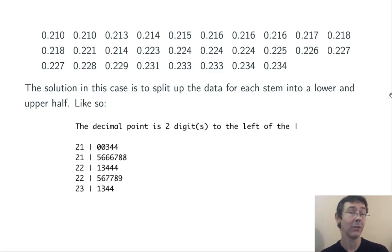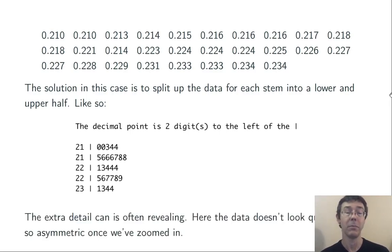Now, instead of only having three stems, we have six total, and we can get a better feel for the shape of the data. Sometimes that extra detail can be revealing. For example, here, once we've split the stems, the data looks pretty symmetric, while in the previous display, it looked like it was skewed to the right.